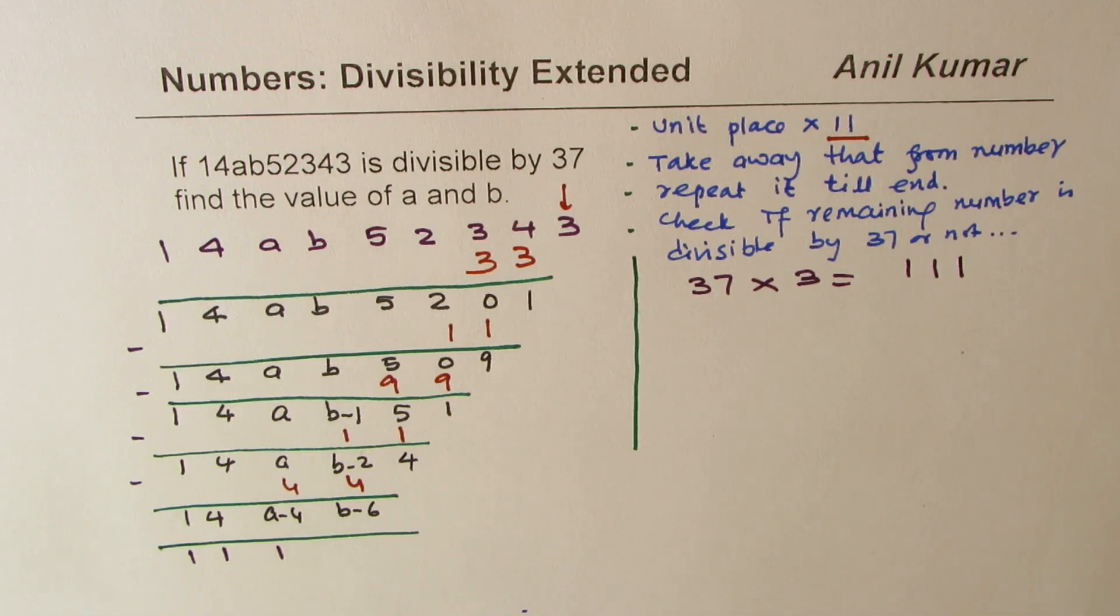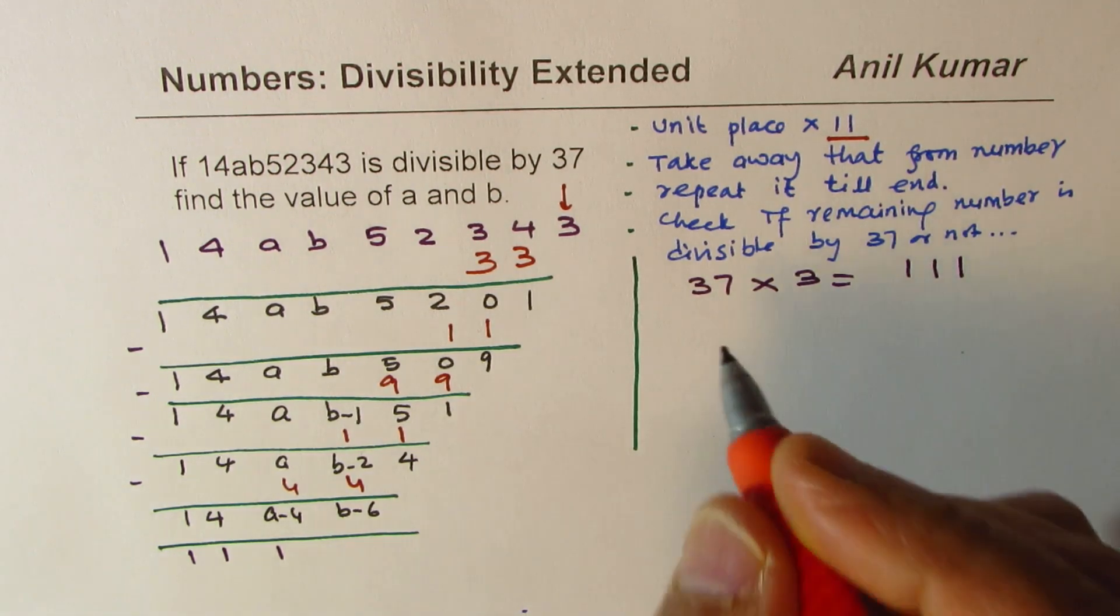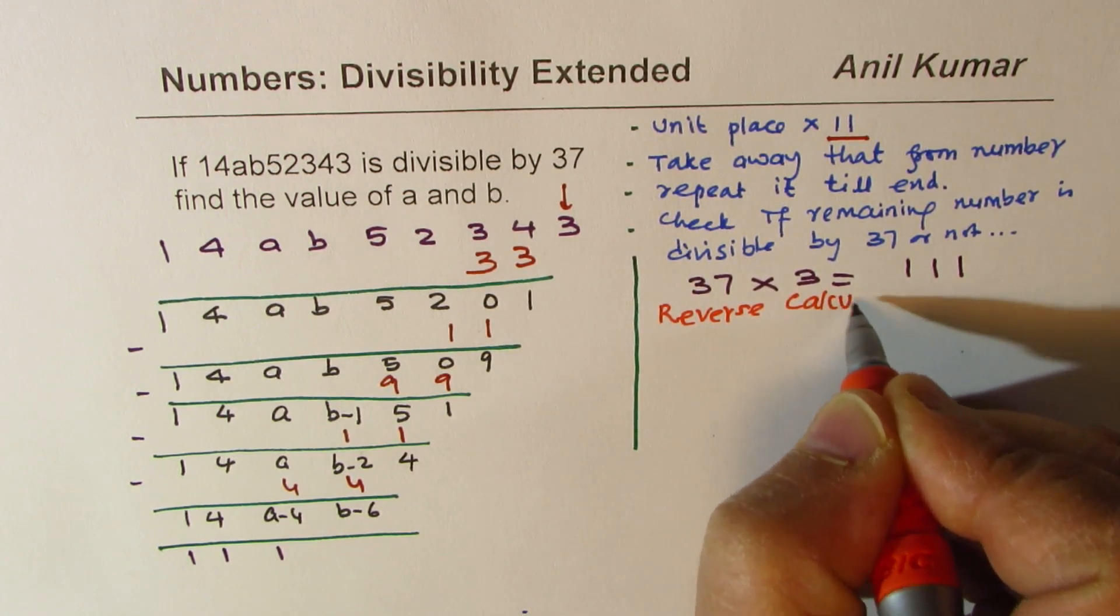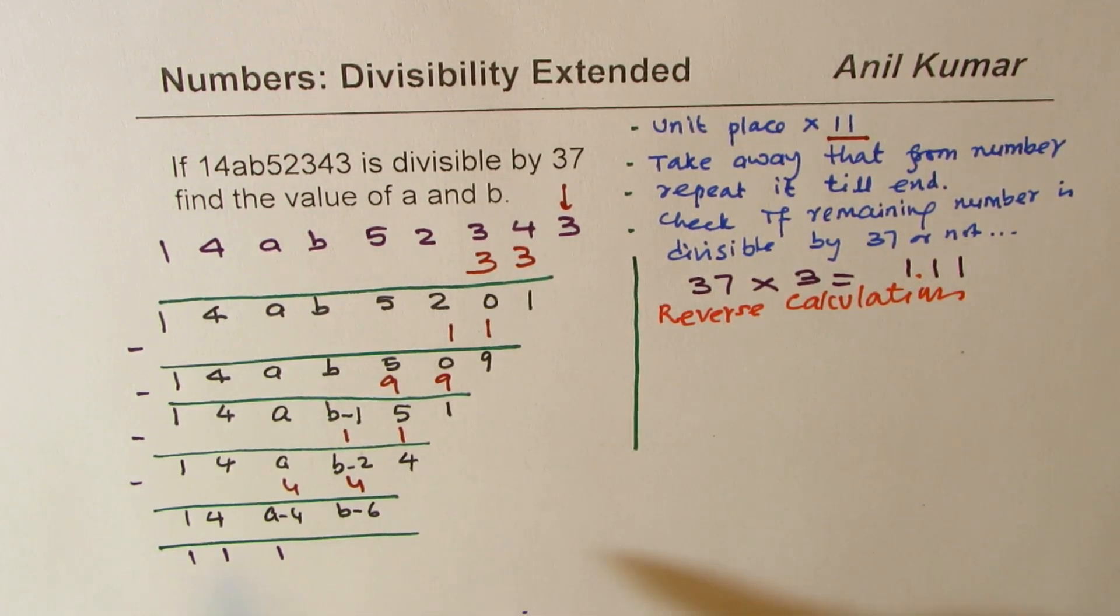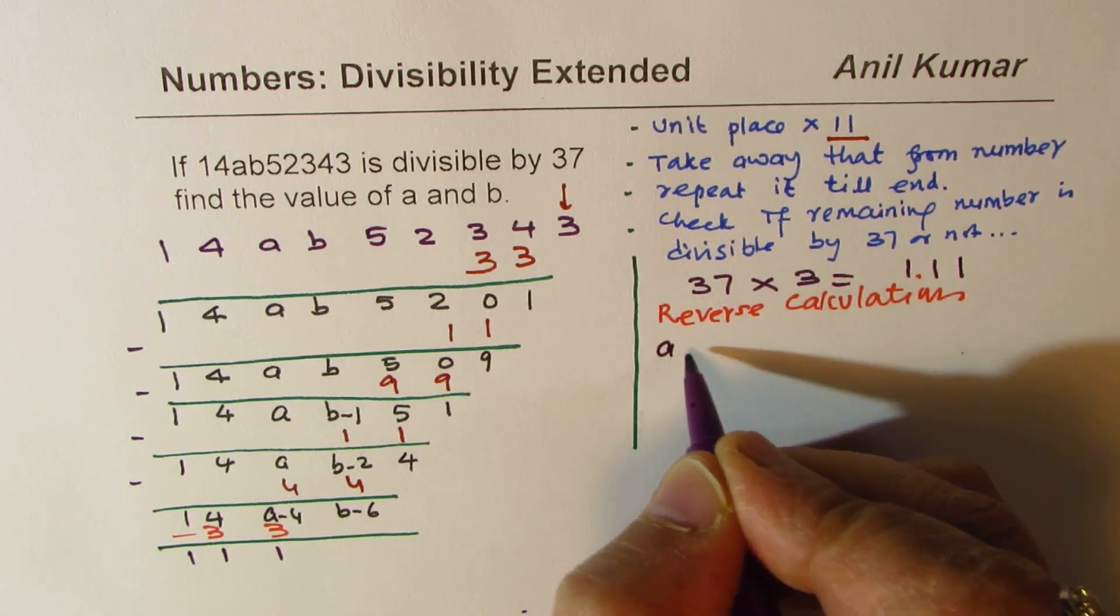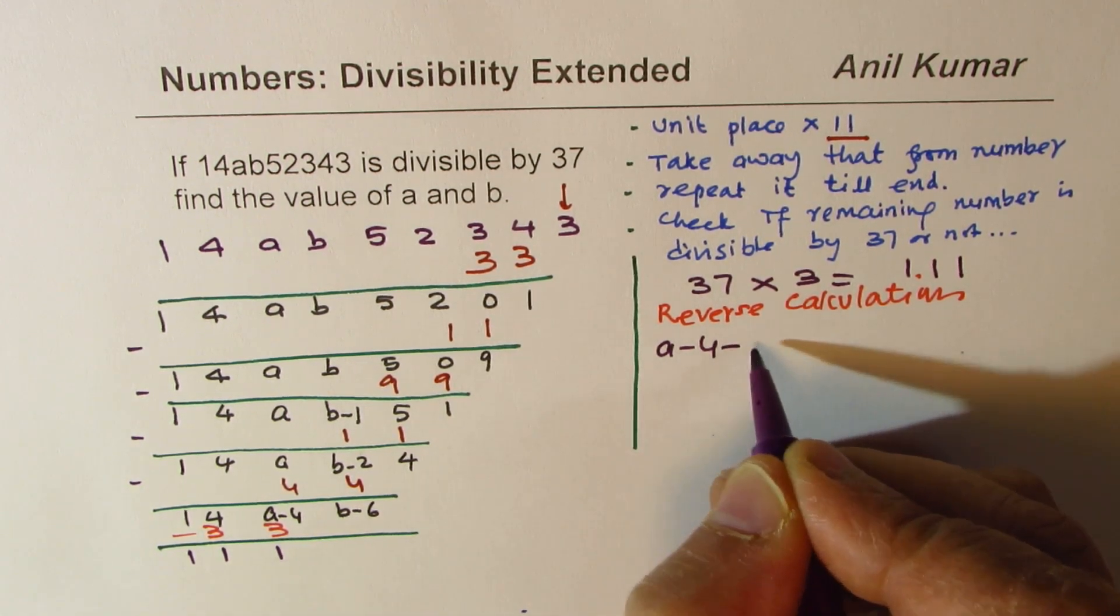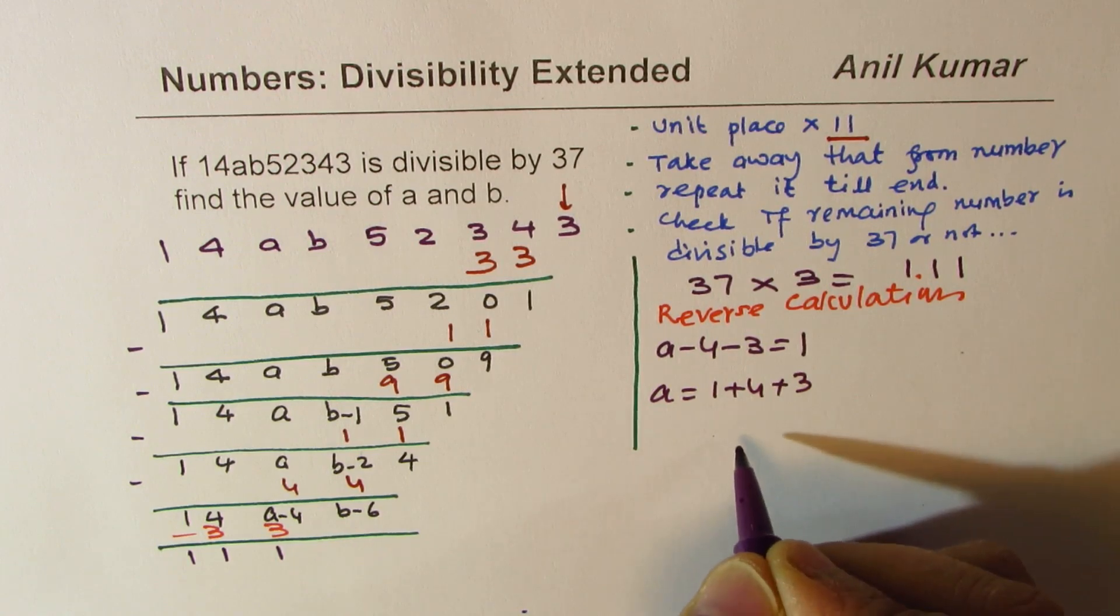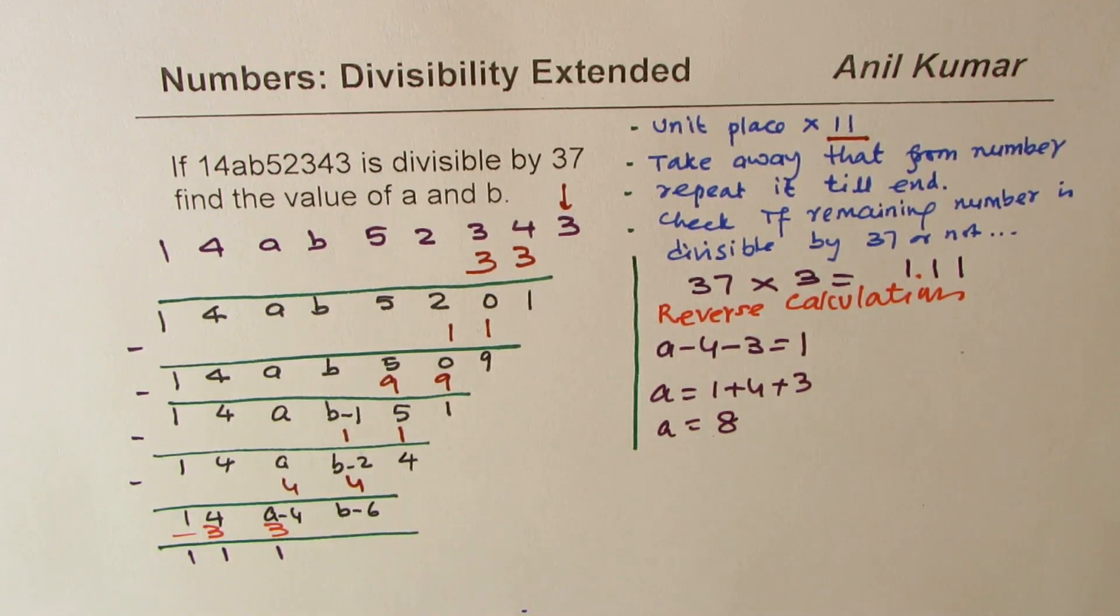So what is a 3-digit multiple of 37? Let's multiply by 3. 3 times 7 is 21, 2. So we get 111. So if I am looking for a multiple of 37, I am expecting the difference to be 111. Only then, this is a multiple. So we are doing reverse calculation. At this stage, we are doing reverse calculation. To get 1, I should subtract 3. So I have to take away 3, rather 33, because we have to have a multiple of 11 to get 1, 1, 1.